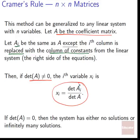We'll see Cramer's rule applied to a 2-by-2 matrix in example 2, and on a larger scale in example 3. Also note: if the determinant of A equals zero, the system will have either no solutions or infinitely many solutions.